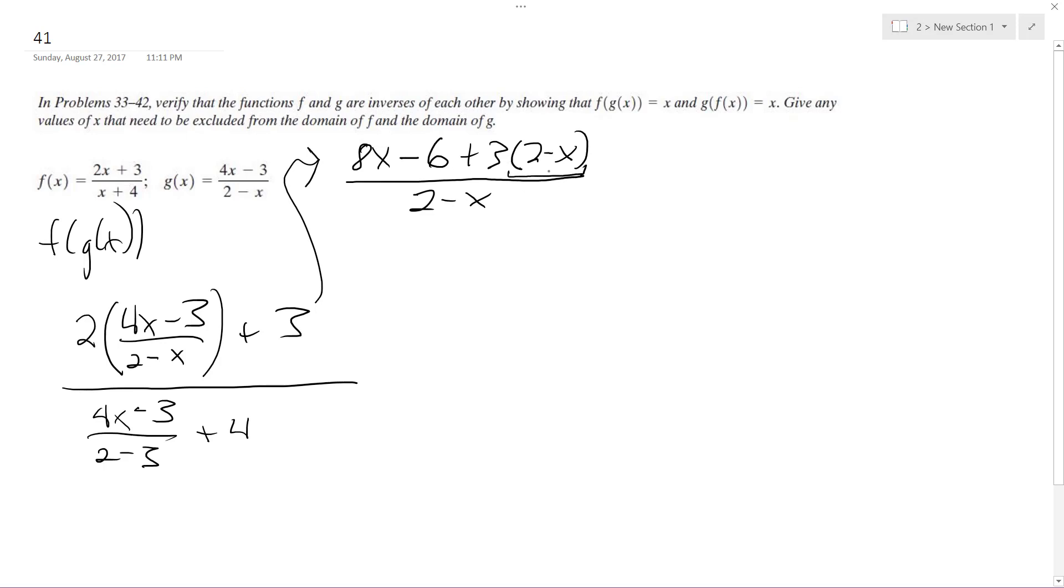What I did here is I'm able to have common denominators because I've multiplied 3 times 2 minus x. I haven't distributed yet, though. So this becomes 4x minus 3 plus 4 quantity 2 minus x. Yeah, it should be 2 minus x.